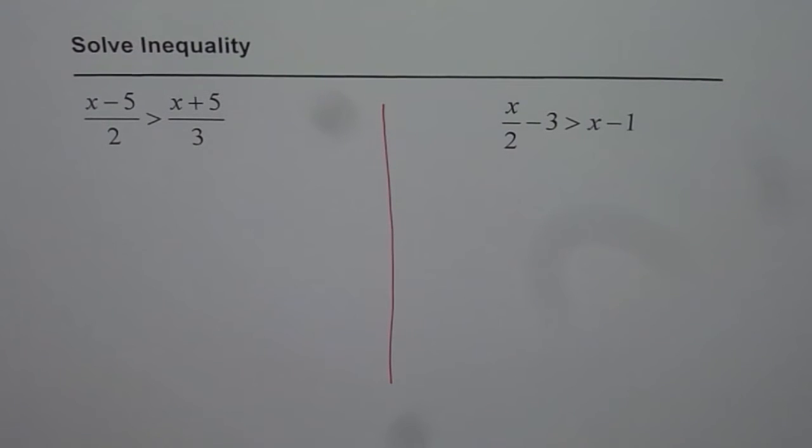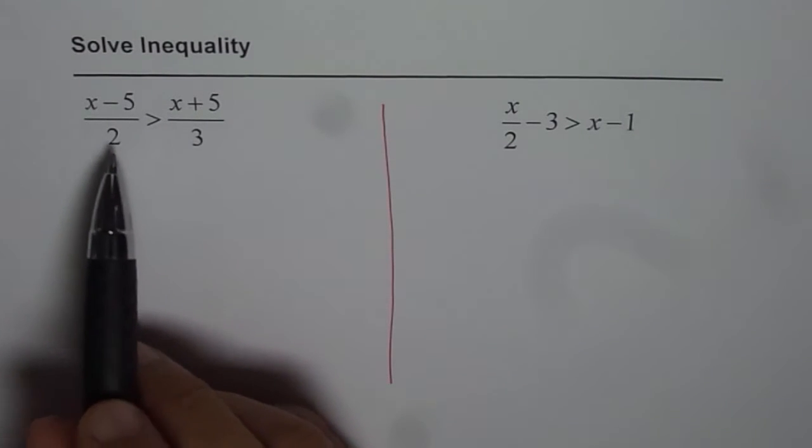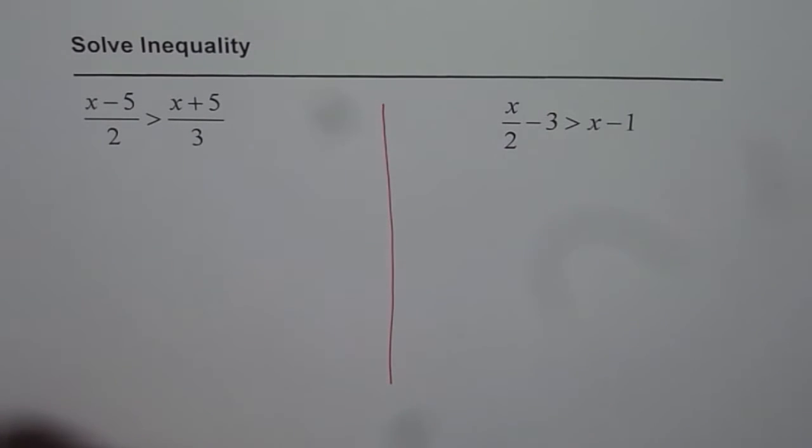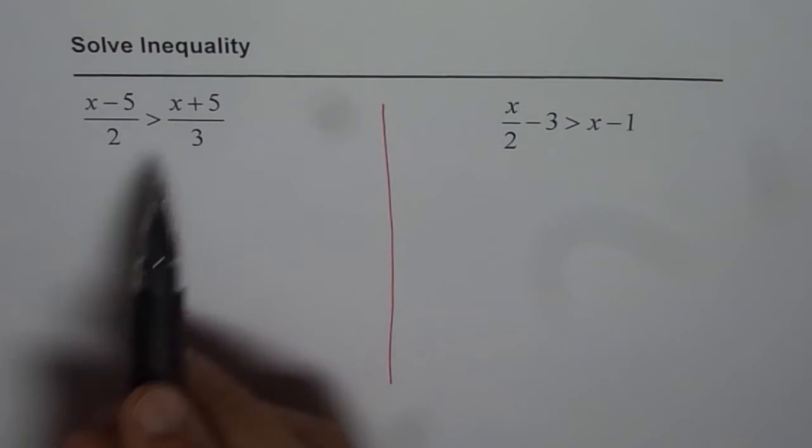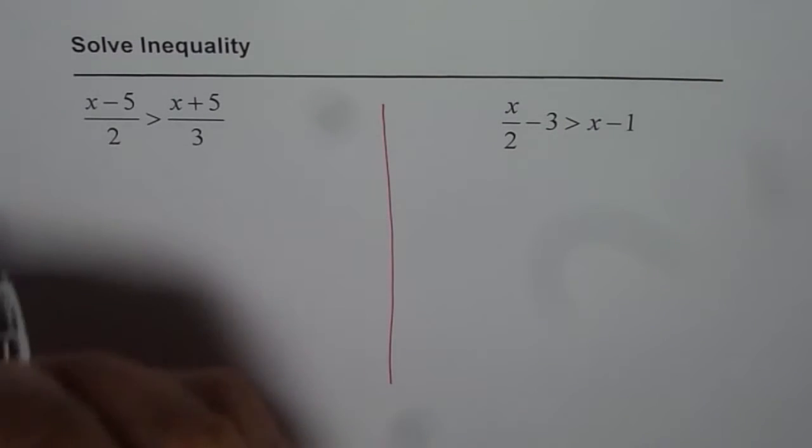The first one is x minus 5 divided by 2 greater than x plus 5 divided by 3. Now they involve fractions. So the first step is multiply both sides by least common denominator. Now 2 and 3, the least common denominator is 6. So let's multiply by 6.